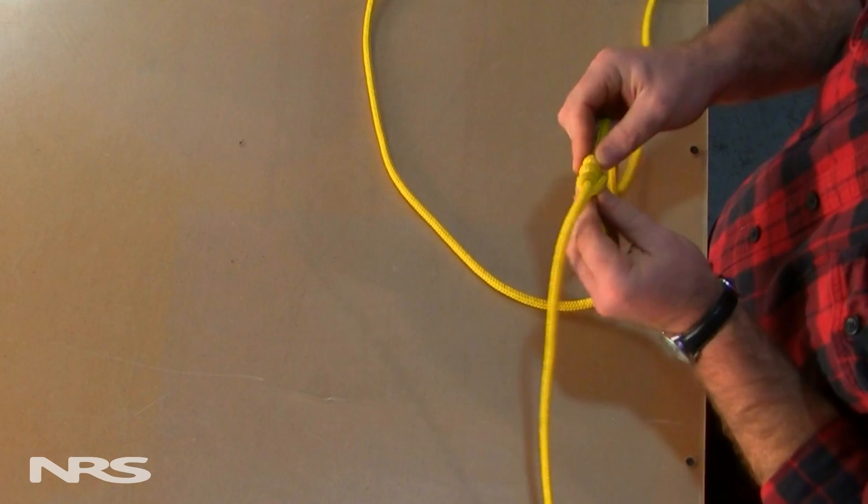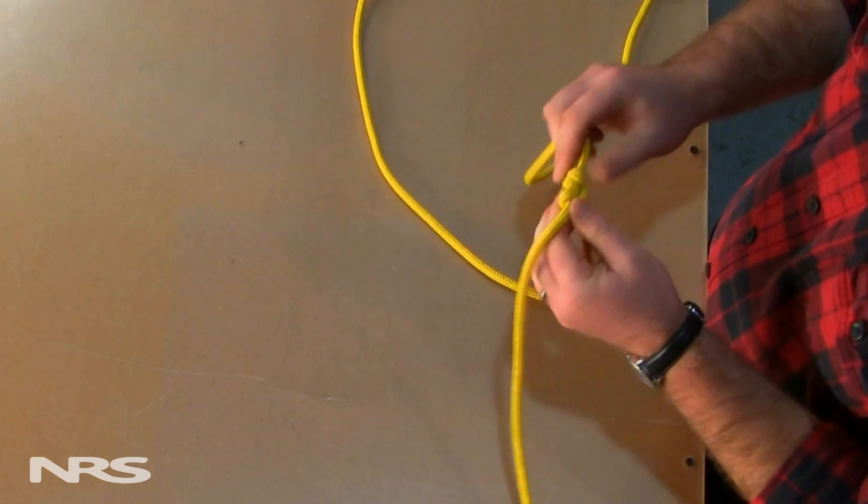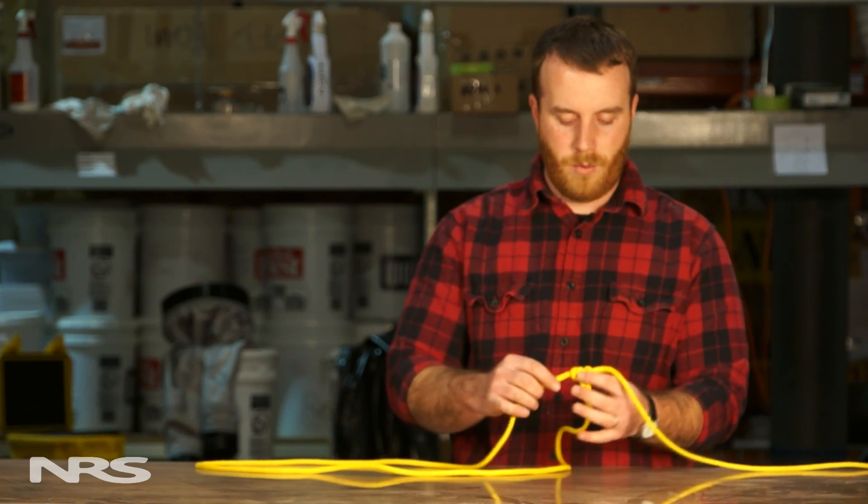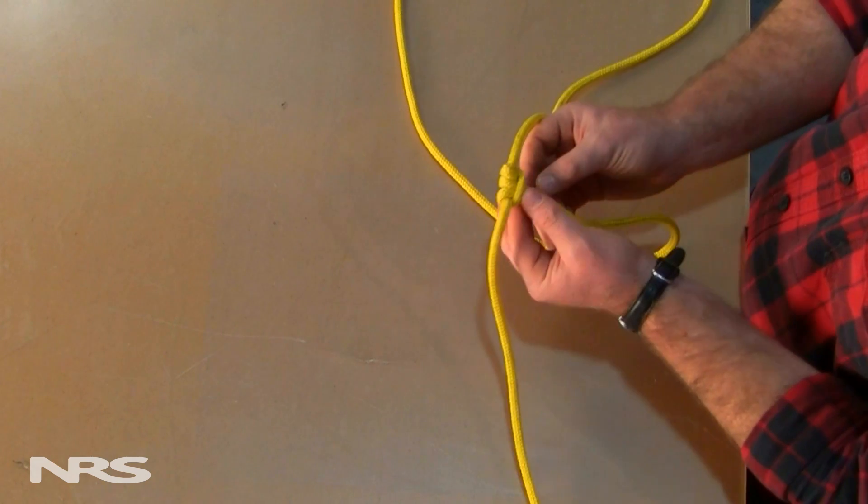You don't want anything crossed over. You want a nice, neat knot. You end up with three loops on the rope, and it should look just like this.